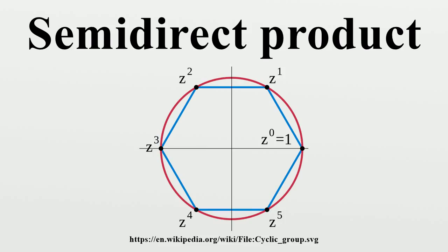The operation is defined by (n1, h1)(n2, h2) for n1, n2 in N and h1, h2 in H. This defines a group in which the identity element is (e, e) and the inverse of the element is given by h^(-1).